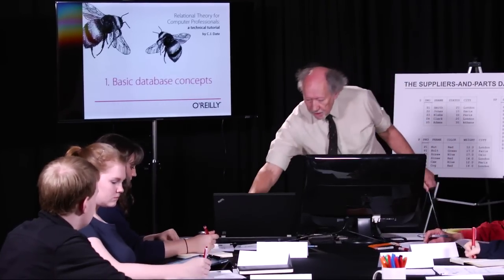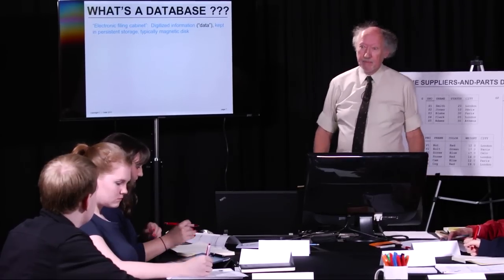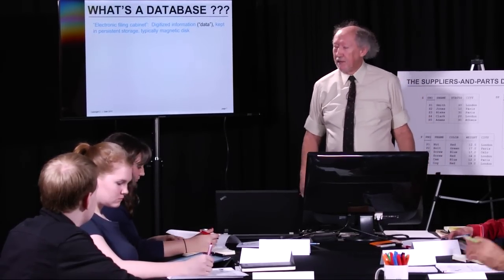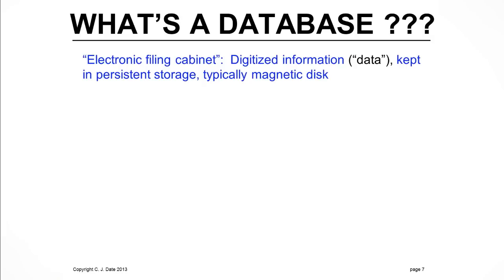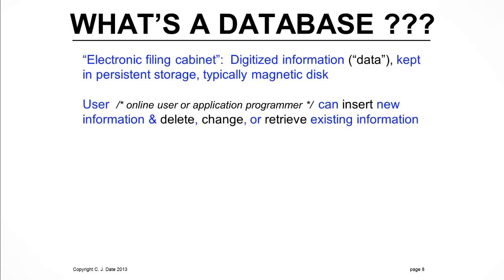Basic database concepts. First question, of course, is: what is a database? A very glib kind of definition is it is an electronic filing cabinet — a place where you keep information, but you keep it electronically. The information is digitized — data, we call it — kept in some form of persistent storage, very typically on magnetic disk. As a user of a database, you can put information in, insert new information, delete existing information, change existing information, and of course retrieve information from the database when you need it.